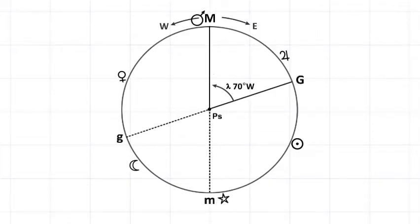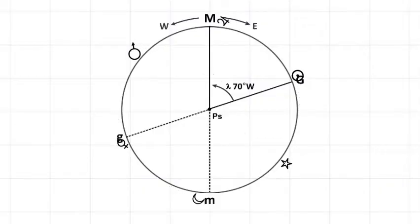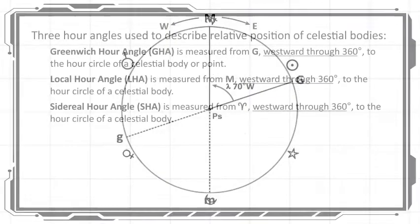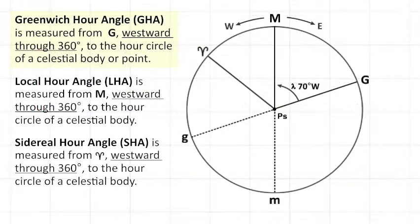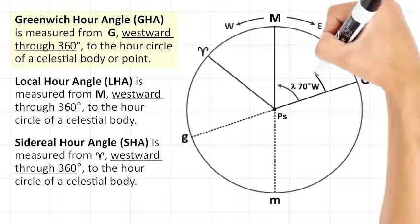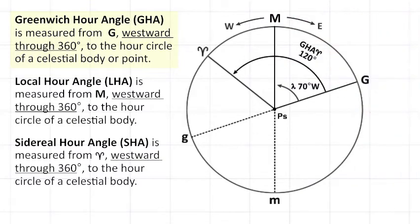The apparent rotation of the celestial sphere causes celestial bodies and their hour circles to travel from east to west. Three hour angles are used to describe the relative position of celestial bodies. The Greenwich hour angle, abbreviated to GHA, is measured from G westward to the hour circle of a celestial body or point.